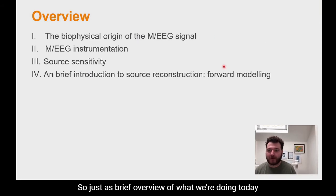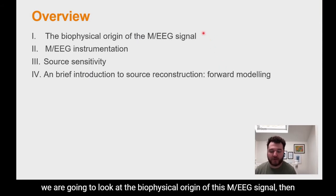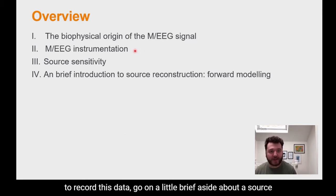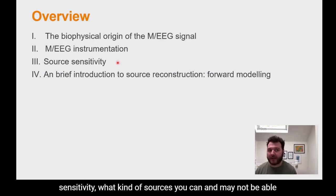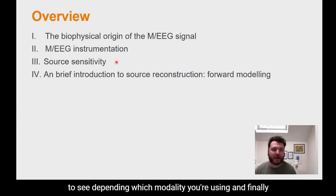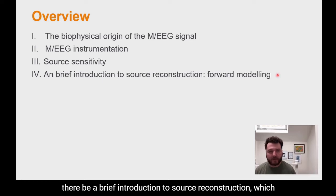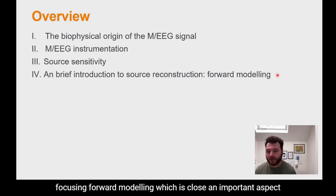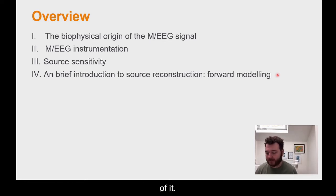As a brief overview of what we're doing today: we're going to look at the biophysical origin of the MEG and EEG signal, then we'll look at some of the instrumentation used to record this data, then go on a brief aside about source sensitivity — what kinds of sources you can and may not be able to see depending on which modality you're using — and finally there'll be a brief introduction to source reconstruction, with a particular focus on forward modelling.